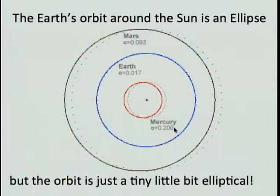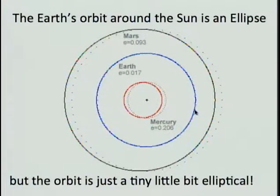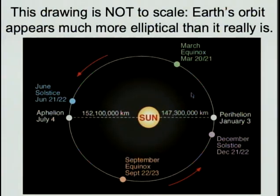Let's revisit the idea that Earth's orbit around the Sun is an ellipse. It is an ellipse, but it has very small ellipticity. Look at the orbits of Mercury and Mars — the solid and dashed lines represent the actual orbit and the orbit the planet would have in a perfect circle. We can clearly see Mercury's orbit is elliptical, but for Earth we can't see the difference — one line is right on top of the other, because Earth's ellipticity is very small. Many textbook images conveying Earth's elliptical orbit are definitely not to scale.